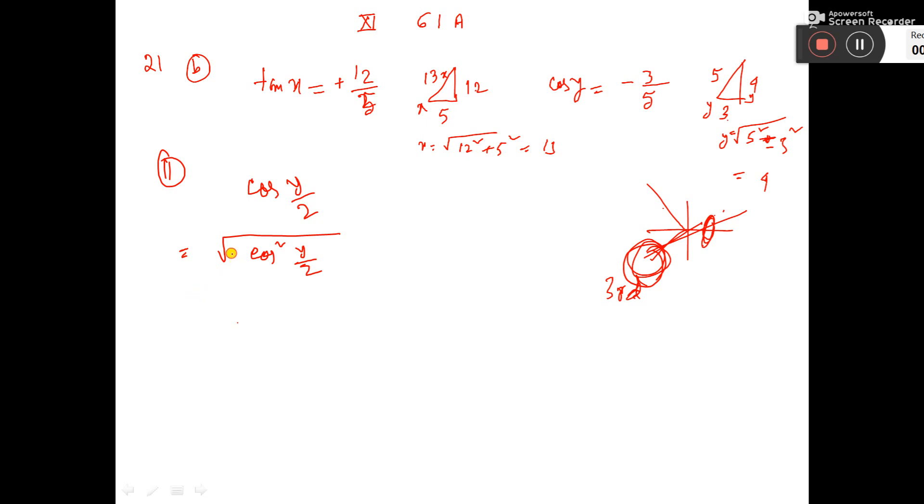Then, here inside bracket, we have to take 1 by 4 into 4. Now, 1 by 2 into 2. Why? Because the 2 cos square formula is there.